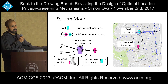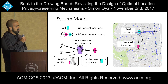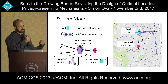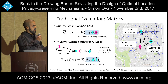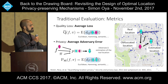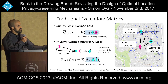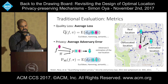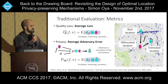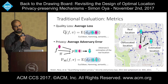We assume the service provider knows the prior over real locations and the mechanism being used, and she also observes the obfuscated location. She provides some utility but can also act as an adversary trying to learn the real location. The traditional way these mechanisms have been evaluated consists of comparing two metrics: a utility metric and a privacy metric. The utility or quality loss metric is the average loss — the expected distance between the real location and the obfuscated location. For example, a mechanism with an average loss of 200 meters means you're on average reporting locations 200 meters away from you. This distance can be Euclidean, Hamming, or Semantic.